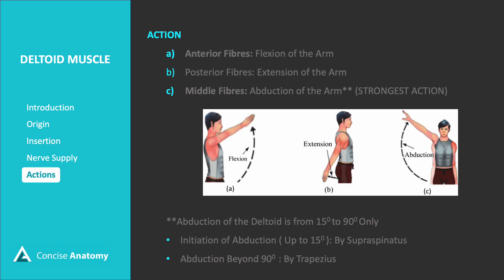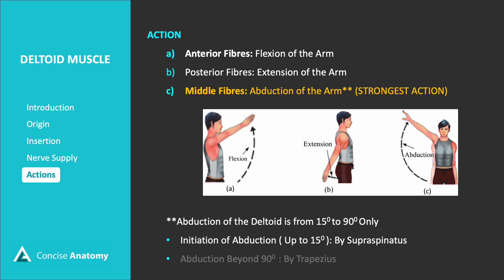The deltoid muscle performs several actions based on its fiber orientation. The anterior fibers are responsible for flexion of the arm, while the posterior fibers facilitate extension. The middle fibers play a crucial role in abduction of the arm, which is considered the strongest action of the deltoid. Notably, abduction by the deltoid occurs from 15 to 90 degrees. Initiation of abduction up to 15 degrees is primarily performed by the supraspinatus muscle, while abduction beyond 90 degrees is assisted by the trapezius muscle.